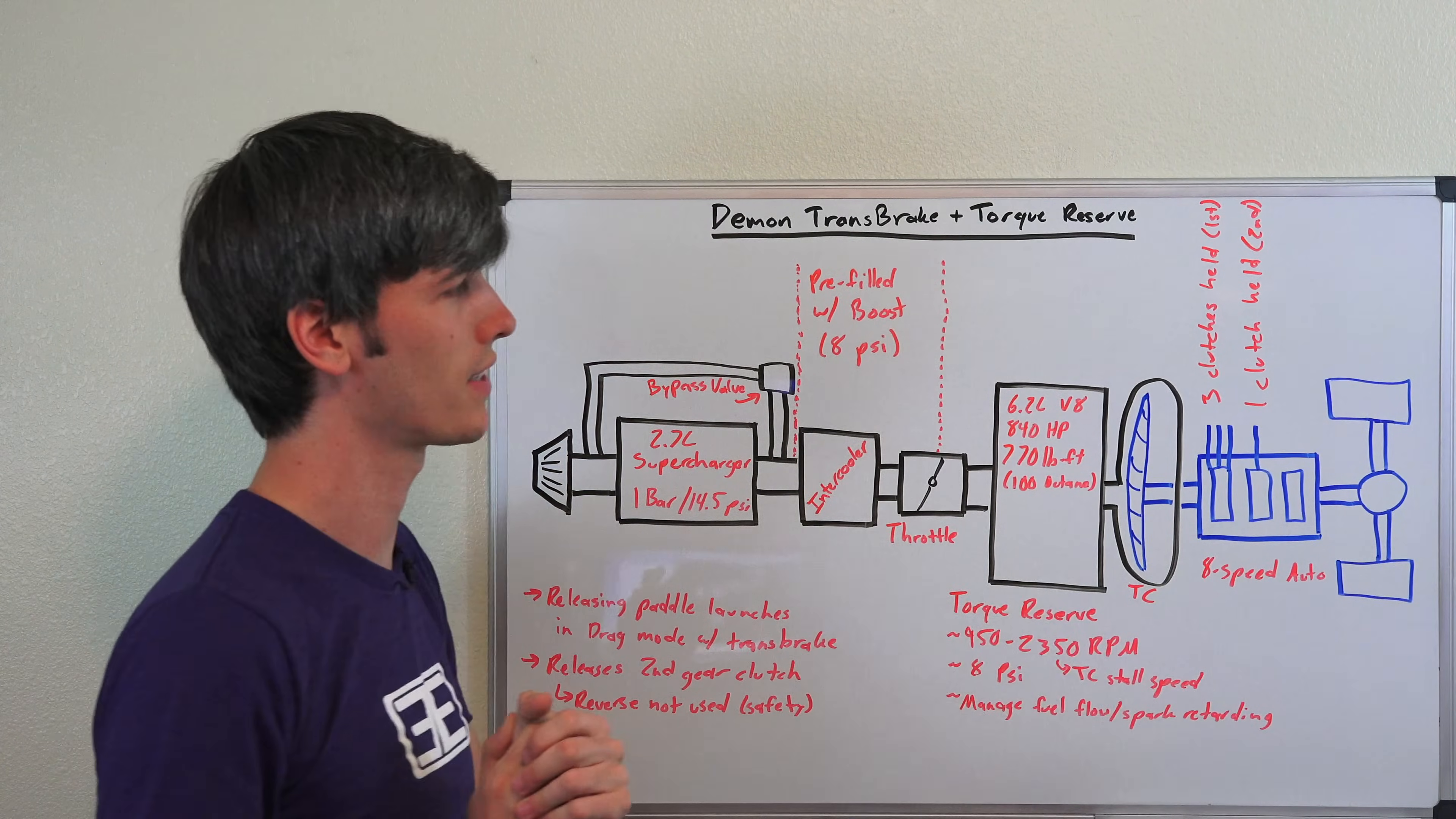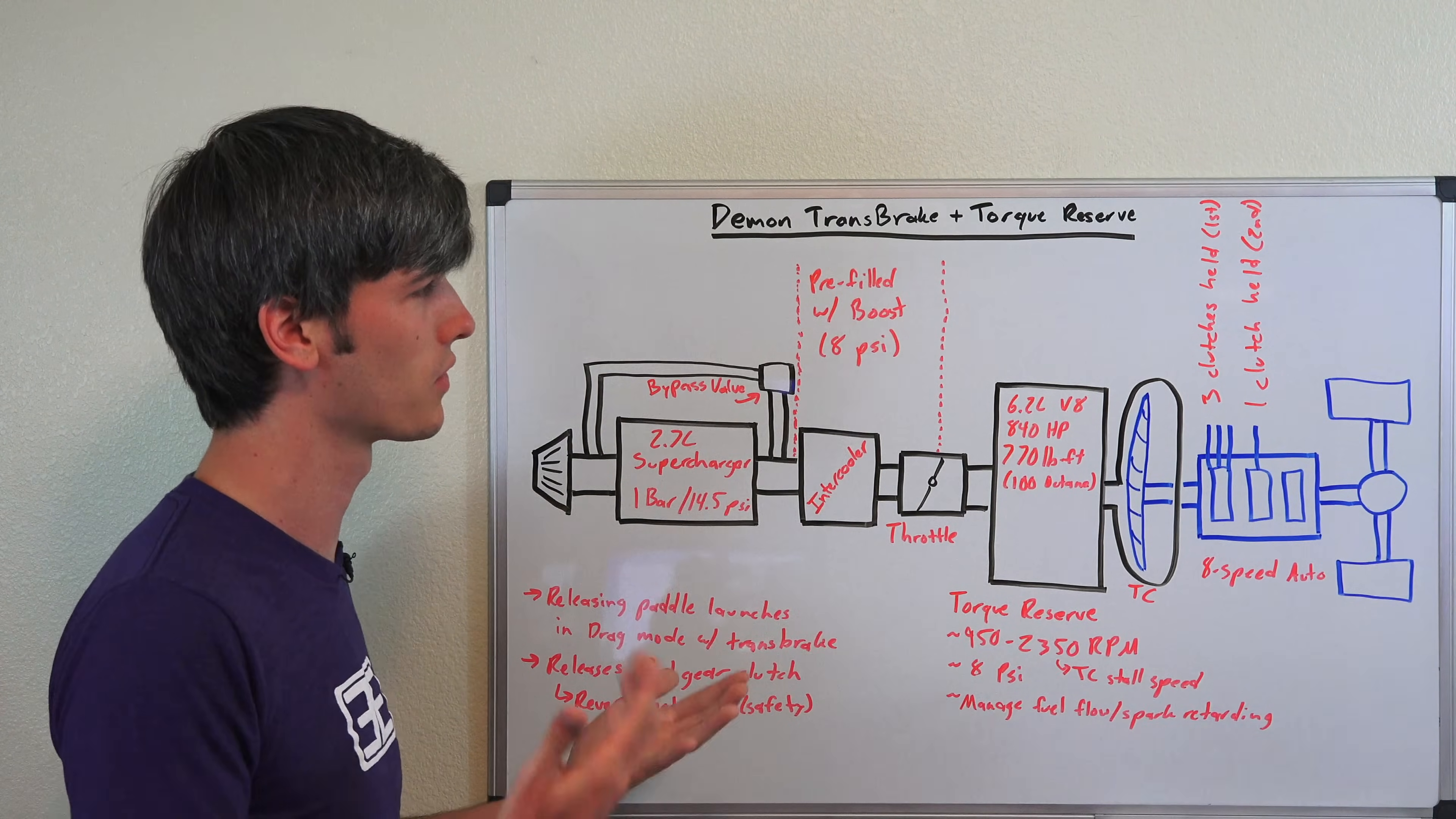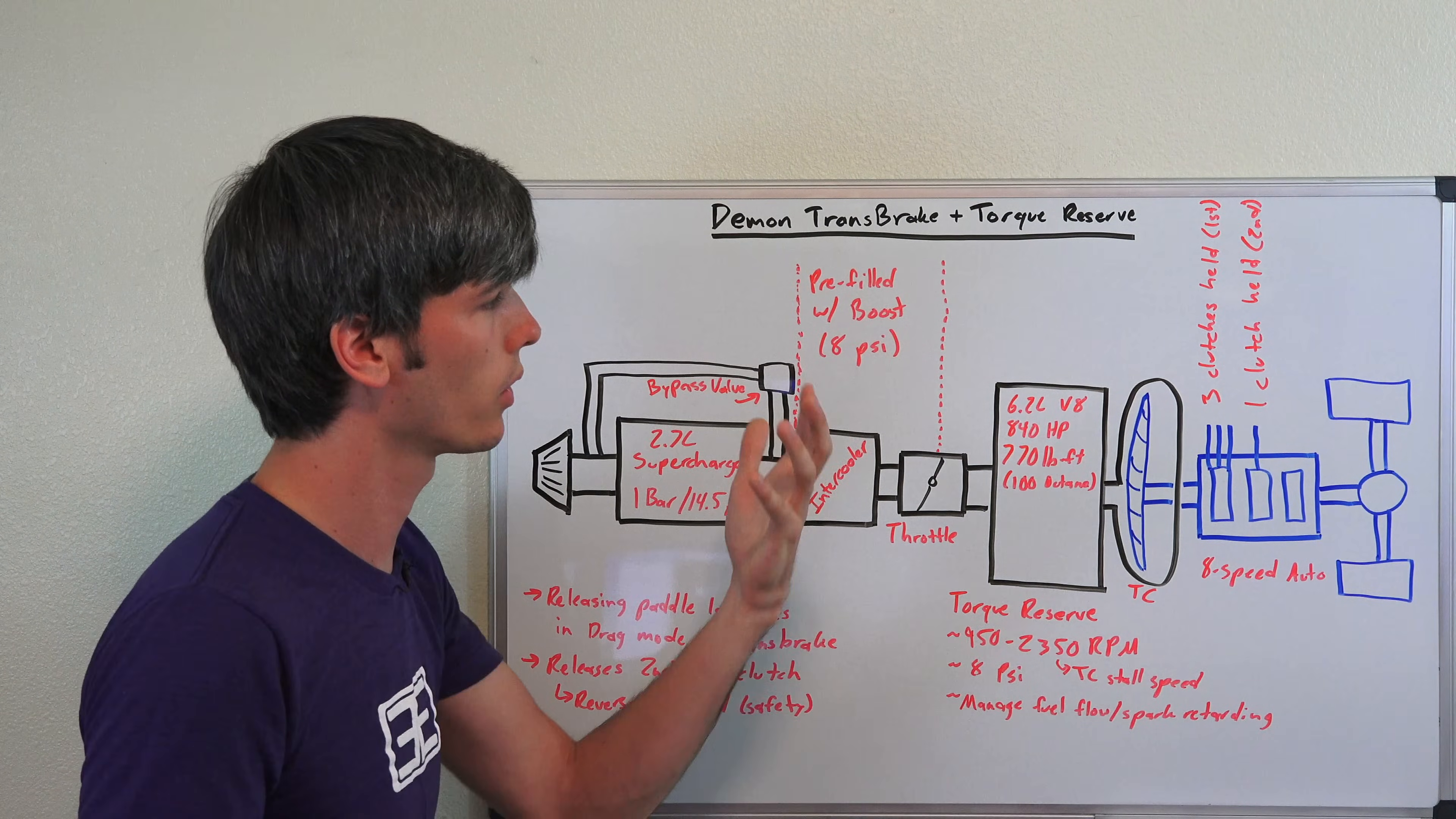Now if you're familiar with trans brakes, you may say, you know, traditionally they tend to use, or often they do use, first and reverse gear rather than first and second gear. I asked Dodge why did they do first and second. They said it's for safety reasons, which makes a ton of sense. So let's just say hypothetically something were to fail—if you had it in first and reverse, you don't want the car flying backwards when everyone is assuming that if you're about to launch it's going to go forwards.